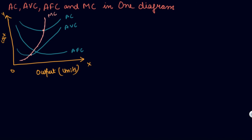In this video, we will be studying the relationship between AC, AVC, AFC, and MC in the same diagram. These represent average cost, average variable cost, average fixed cost, and marginal cost.